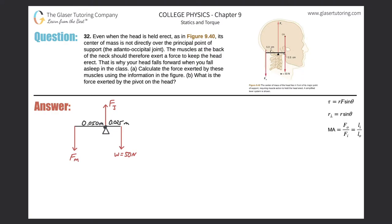Number 32. Even when the head is held erect, as in figure 9.40, its center of mass is not directly over the principal point of support, the atlanto-occipital joint. The muscles at the back of the neck should therefore exert a force to keep the head erect. That is why your head falls forward when you fall asleep in class, or when you repeatedly bash your head into the desk because it's more fun than sitting through the boring lecture.